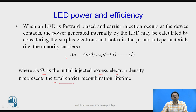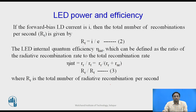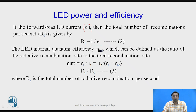When the LED is forward biased with current i, the total recombination rate per second R(t) is given by i/e, where i is the current and e is the electron charge. The internal quantum efficiency η_int is defined as the ratio of radiative recombination to the total recombination rate.